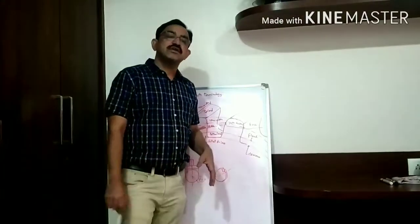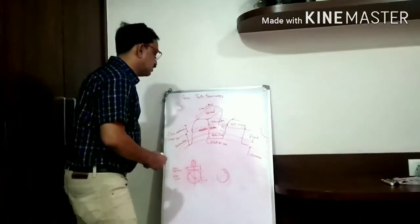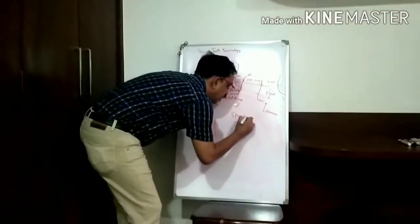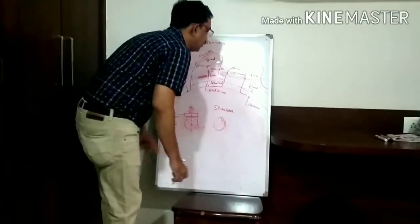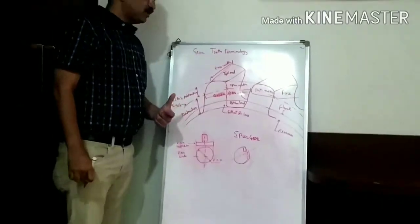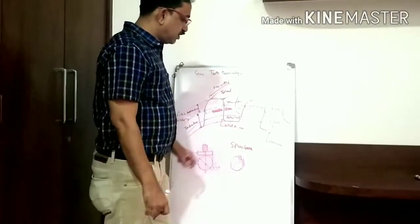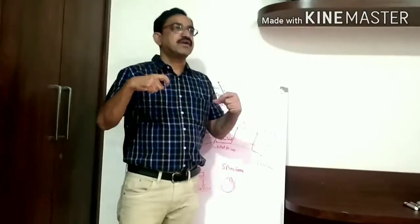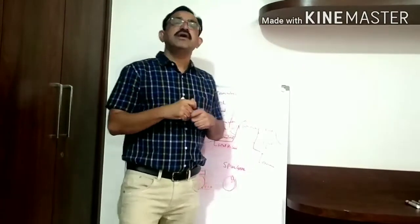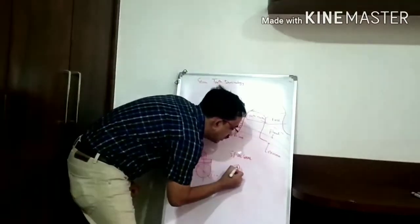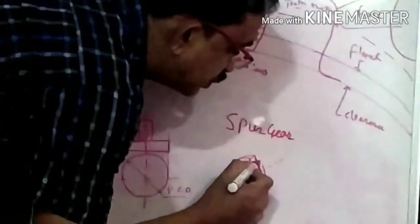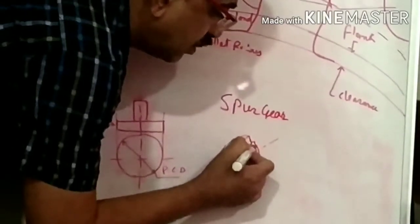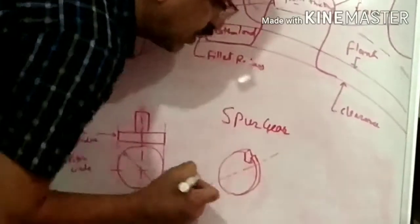Today we will see the first type of gear, that is the spur gear, and then we will see the terminologies of the gear. Spur gear: in this case the shafts are parallel. The spur gear is mounted on parallel shafts. The teeth of the spur gear are cut parallel to the axis of the shaft — that is one specific characteristic.